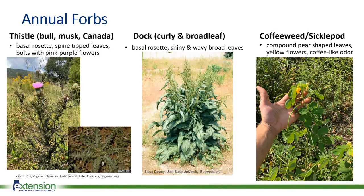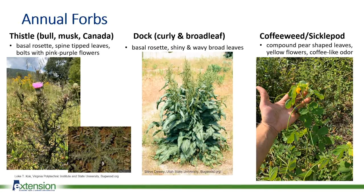Thistles are annual forbs that colonize disturbed areas. They grow in what's known as a basal rosette — the ideal time to control them is when they're in that young growing stage. After they've bolted and put out a flower, it's very difficult to control with chemical, and the only option is severing the taproot with a hand shovel and removing the plant before seeds mature and spread. Thistles generally have spine-tipped leaves and a pinkish-purple flower. The most common in Alabama is musk thistle.